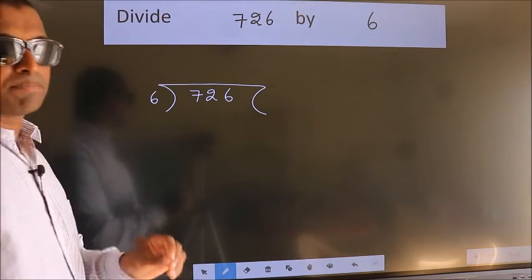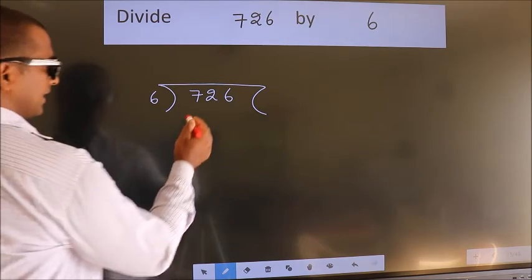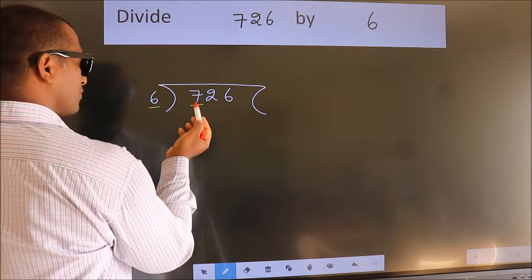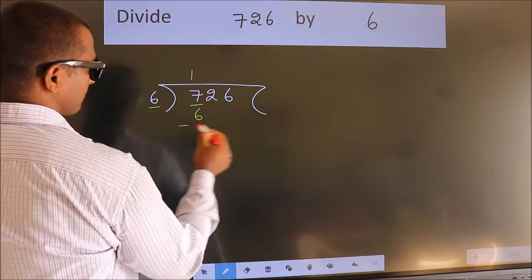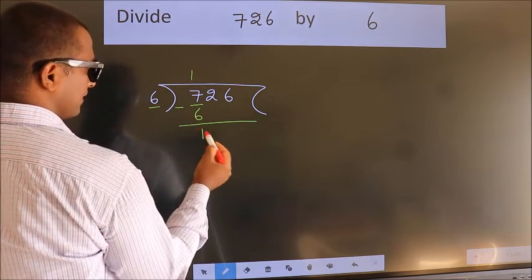This is your step 1. Here we have 7, here 6. A number close to 7 in 6 table is 6 ones, 6. Now we should subtract. We get 1.